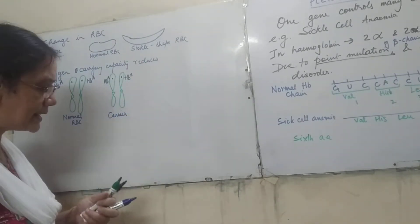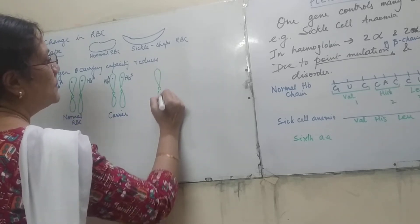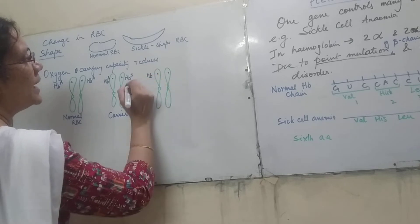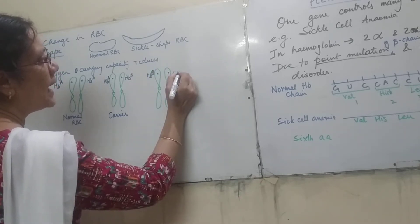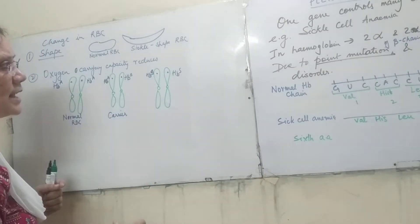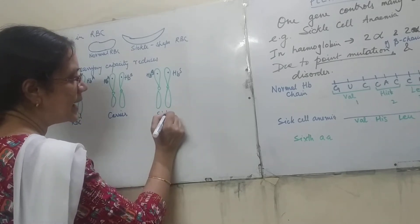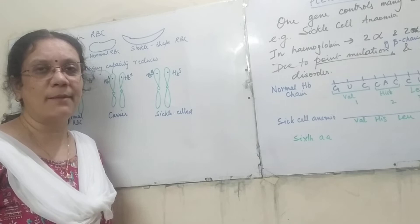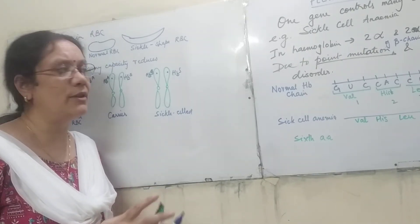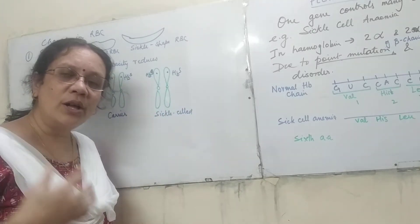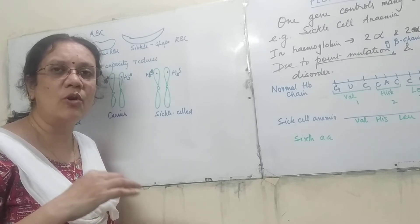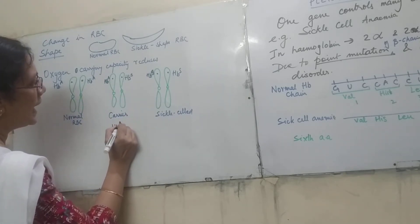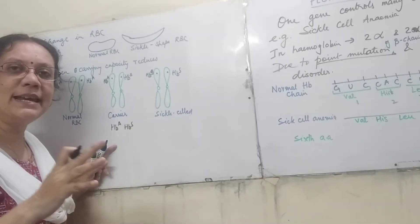If the mutation has happened in both alleles — HbS and HbS — that person has sickle cell anemia. They will not survive for a long time; maximum survival is around 10 to 12 years, because all their red blood cells are unable to carry enough oxygen. A person with HbA/HbS, however, can lead a normal life.